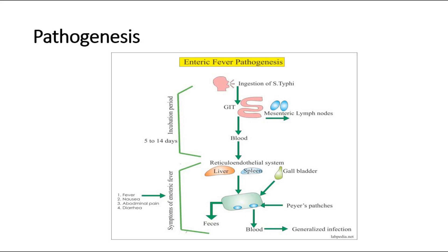There they induce apoptosis of the macrophages and further disseminate to infect other body parts — for example, infecting the gallbladder. The bacteria will then re-enter the gut and the cycle repeats.